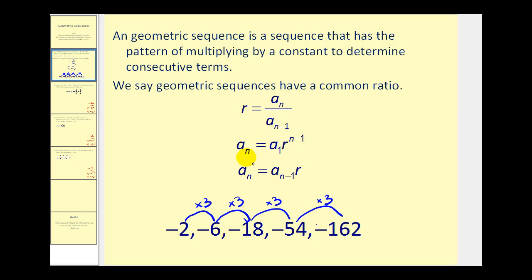This next formula says that we can find any term in the sequence if we take the first term, a sub one, and multiply it by r raised to the power of n minus one. If you take a look at the third term — to get negative eighteen, we multiplied the first term, negative two, by two factors of three. So to get the third term, we multiplied the first term by r twice, or n minus one times.